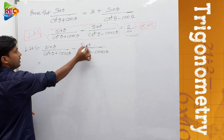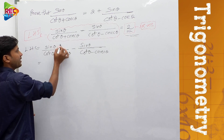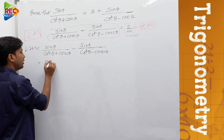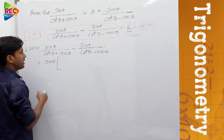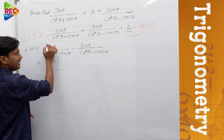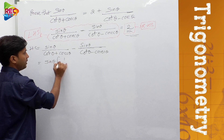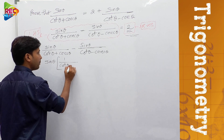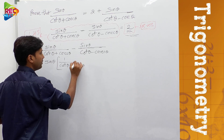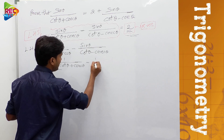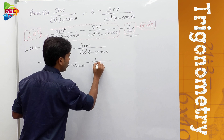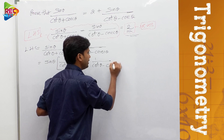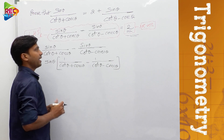Here there are 2 fractions. The common term in both fractions is sin θ. We can take it out. After taking sin θ common, what is left inside the brackets is: 1/(cot θ + cosec θ) minus 1/(cot θ - cosec θ).